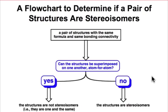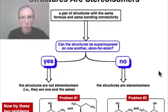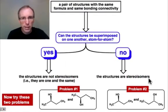This flowchart summarizes what we learned in this webcast. If we have a pair of structures with the same formula and the same bonding connectivity, we should try to superimpose them. If they can be superimposed, then they are not stereoisomers. If they can't be superimposed, then they are stereoisomers. In the next webcast, we're going to classify different kinds of stereoisomers. But before we do that, why don't you try these two problems on your own?